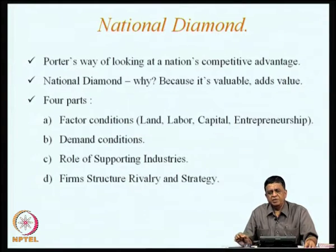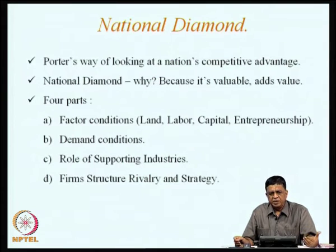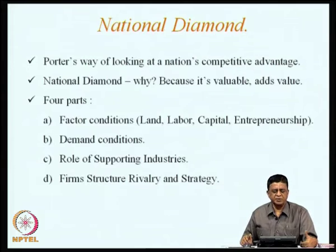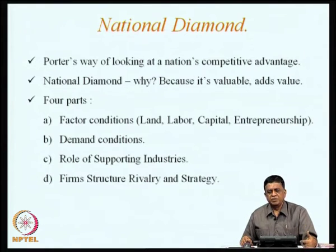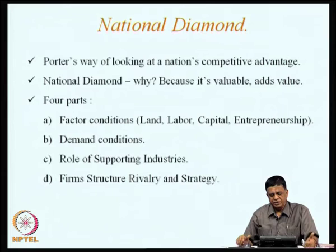When you are looking at the country, you are looking from the lower end to the higher end — from the firm level up to the national level. At the firm level itself, you are looking at all these four parts. When you are moving up, you are again looking at the four parts in a summated manner. When you are looking at the nation, you are looking at these four parts in an aggregated manner. This aggregated manner of looking at these four parts tells you, with respect to a nation, what is the type of competitive advantage it can have in the marketplace.